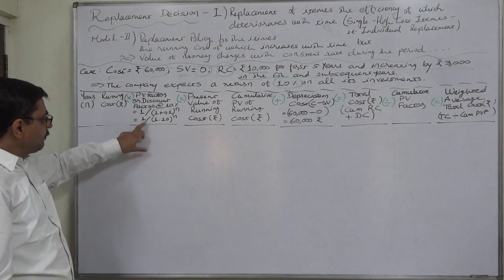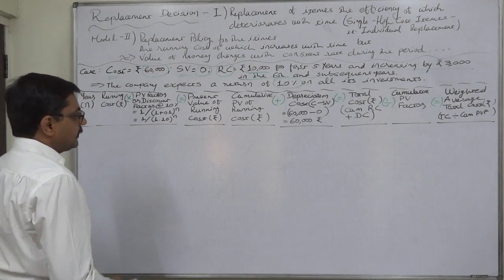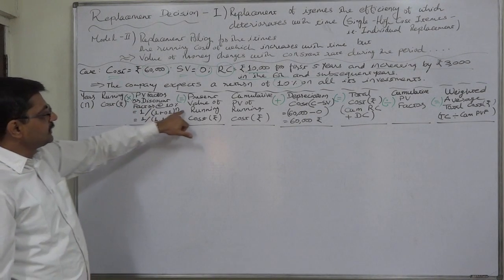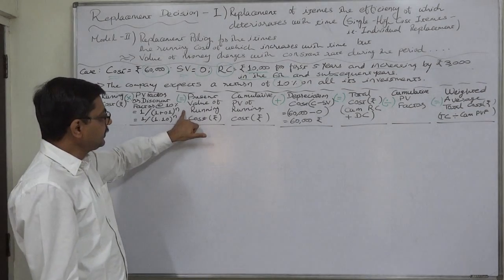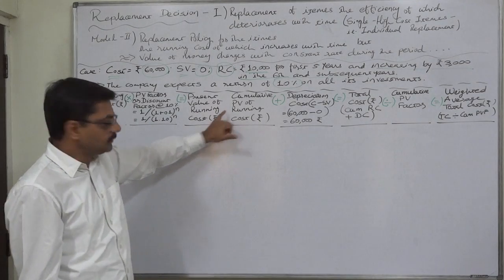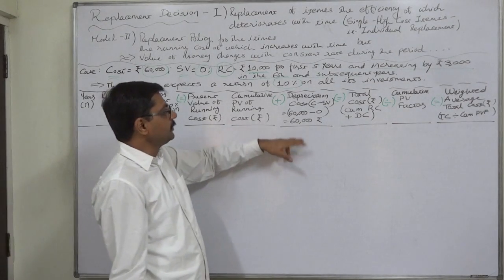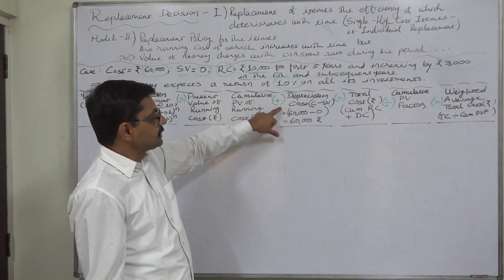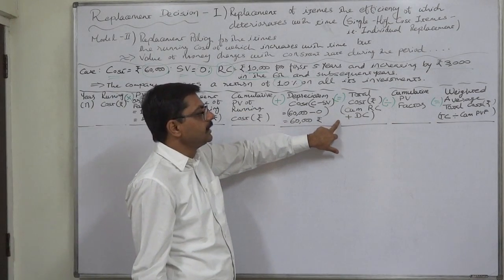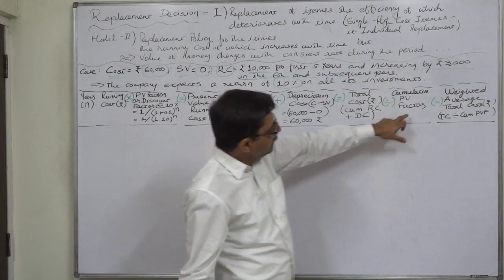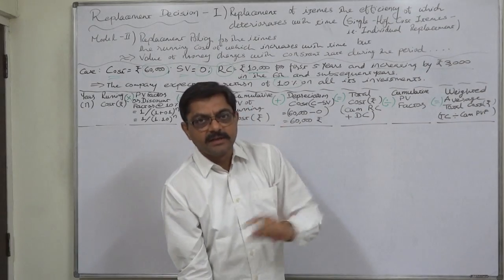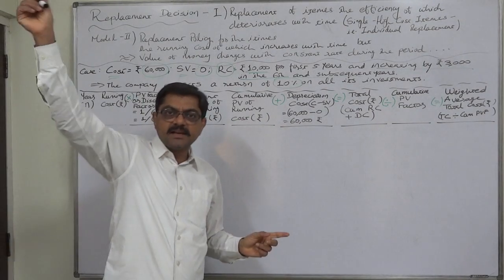So the final PV factor will be 1 divided by 1.1 raised to n. We shall multiply the running cost with the PV factor, so the result will be the present value of running cost. The cumulative PV is the summation of this column. We shall add the depreciation cost — 60,000 minus 0 equals 60,000 — to the cumulative running cost, giving us the total cost. That total cost will be divided by the cumulative PV factor instead of number of years, as in the case of Model 1.